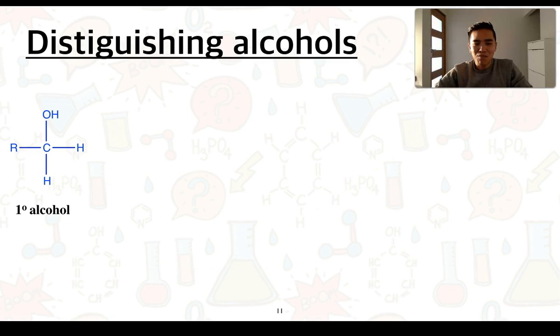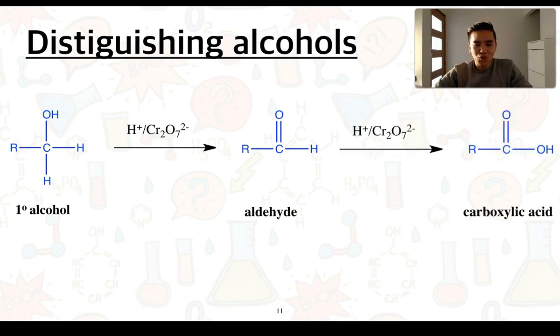We're going to start off by looking at primary alcohols and how they can be oxidized by acidified dichromate. This occurs in two stages. So a primary alcohol firstly can react and become oxidized to form an aldehyde and then it can further react and further oxidize with acidified dichromate to produce a carboxylic acid.